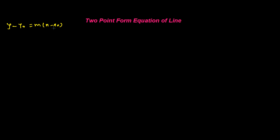Here, x₀ and y₀ is the point given, and m is the slope given by the equation. If you know these two things, we can easily find out one point and one slope, then the equation is this.